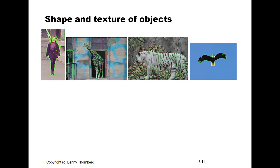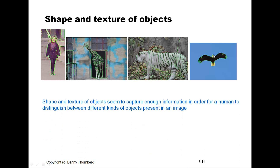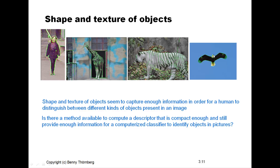From this simple experiment, we can conclude that the shape and the texture of an object is the major information that we need from an image in order for a human to detect an object and distinguish between different kinds of objects. So the question arises: how can we possibly develop a descriptor — a compact mathematical description — that provides enough information for a computerized classifier to detect objects and distinguish between different kinds of objects?